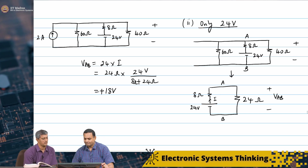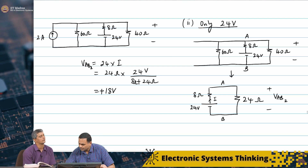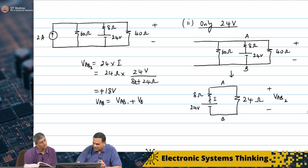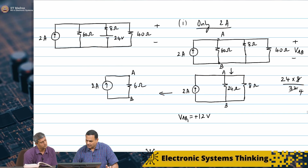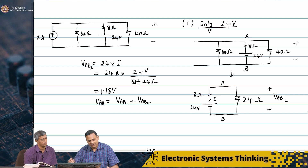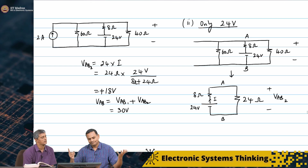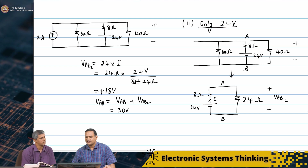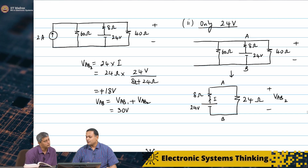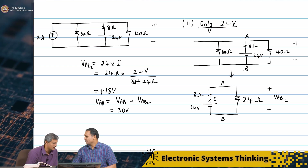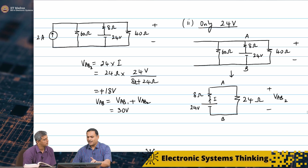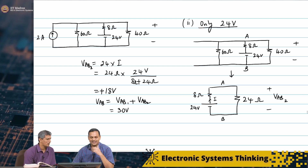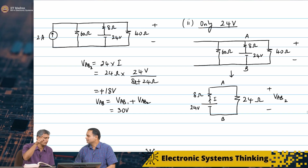VAB2 is 18 volts. Now I know VAB is the sum of the two voltages: we got 12 volts from the first case and 18 volts from the second, so VAB is 30 volts. Once you know this voltage, you can also find the current through the 40 ohm resistor, the 60 ohm resistor — since 60 and 40 are in parallel they share the same voltage — and also the current through the 8 ohm resistor, since VAB is critical in this network.